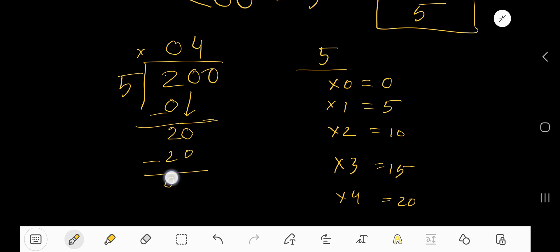Write zero and bring down this zero. 5 goes into zero zero times, so write zero.